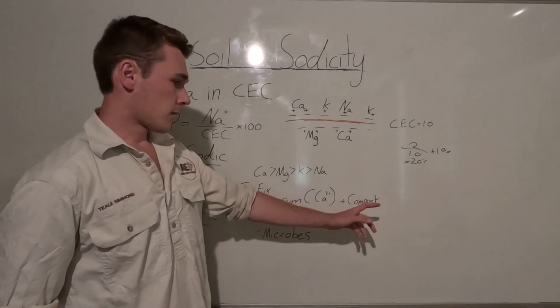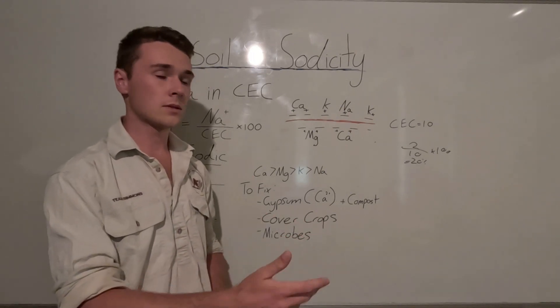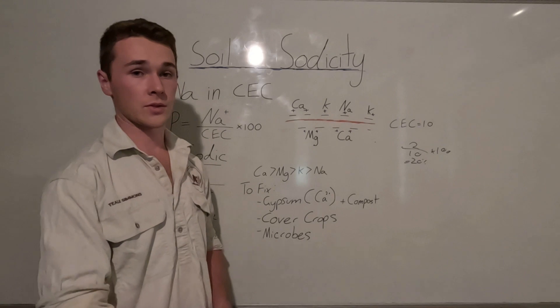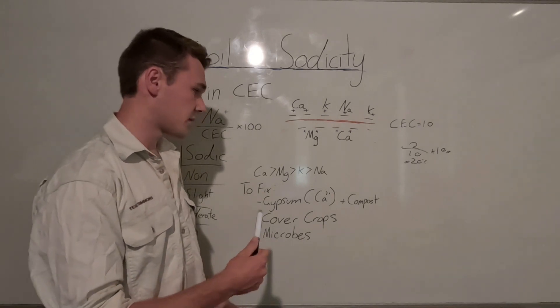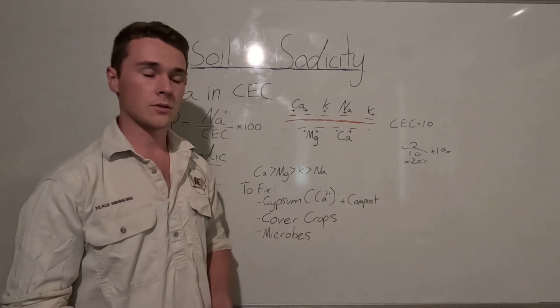So a few ways we could do this is simply just adding it together, so we can use compost or we can use manures. We could also make a compost tea and then dissolve the gypsum into that. That would be an effective way to apply it.